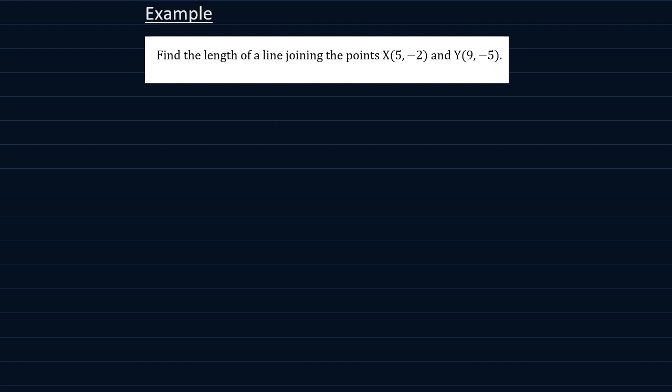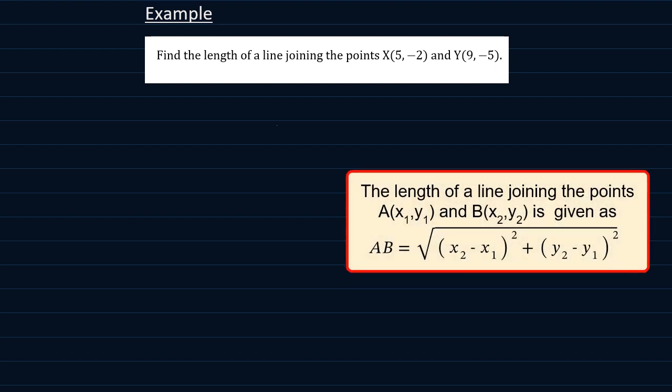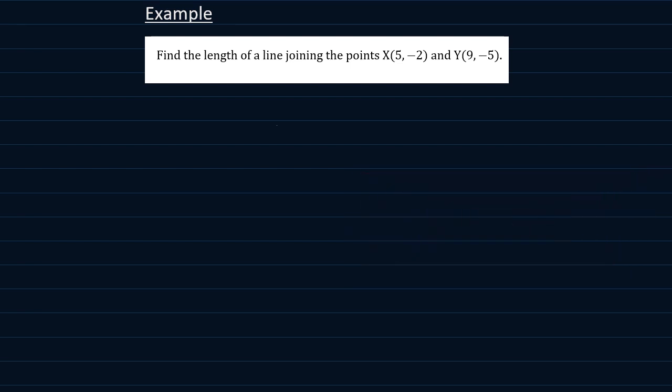Now we've already established that the length of a line joining two points can be calculated this way. So, for the two points that we have, 5, minus 2 and 9, minus 5, we can say let this be our x1 and y1, x2 and y2. So, for the length of the line,